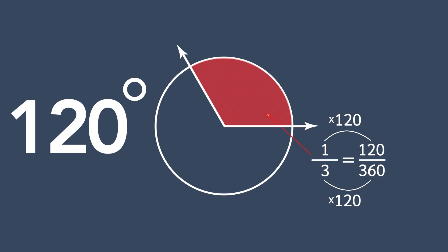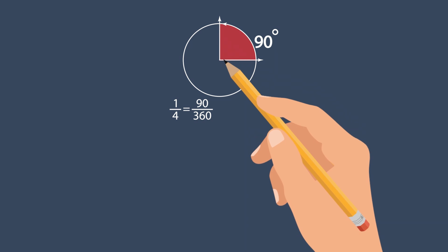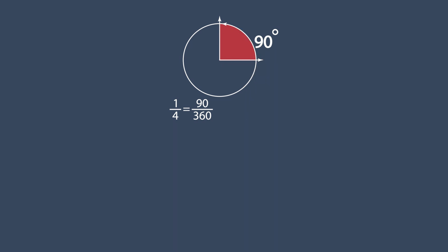Let's take a look at some of the most common angles and their degree measurements. The first one is the right angle. A right angle is the same as 1 fourth of a circle. 1 fourth is equal to 90 over 360. So a right angle has the measure of 90 degrees.